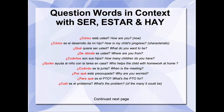¿Qué quiere ser usted? — What do you want to be? To a child, it would be ¿Qué quieres ser? — What do you want to be? ¿De dónde es usted? — From where are you? Where are you from? Again, we use the verb ser because where I'm from is essential to who I am. ¿De dónde es usted?